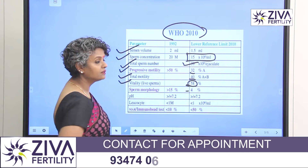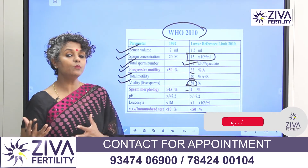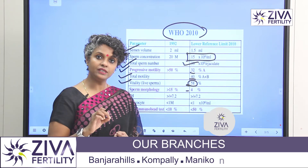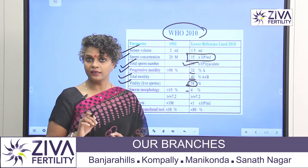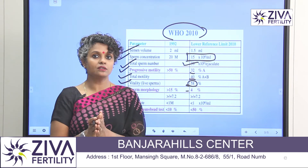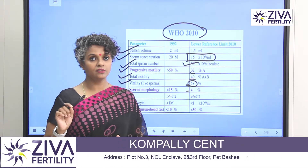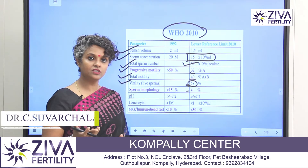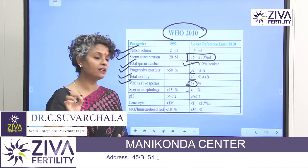When we look at vitality, it should be at least 58 percent. This is because if a sample has all immotile sperms, we do a vitality test where we estimate that out of all these immotile ones, at least 58 percent are alive. We can determine this through a procedure that distinguishes whether they are alive or dead.